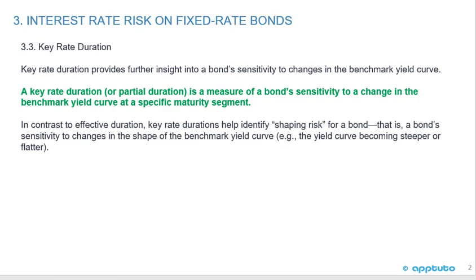So we saw that straight from the Glossary. In contrast to Effective Duration, Key Rate Durations help identify shaping risk for a bond — that is, a bond's sensitivity to changes in the shape of the benchmark yield curve, for example, the yield curve becoming steeper or flatter.